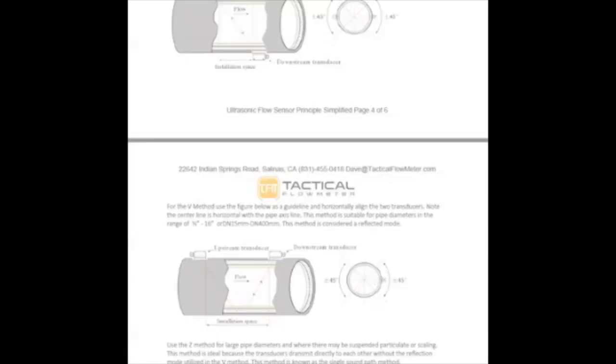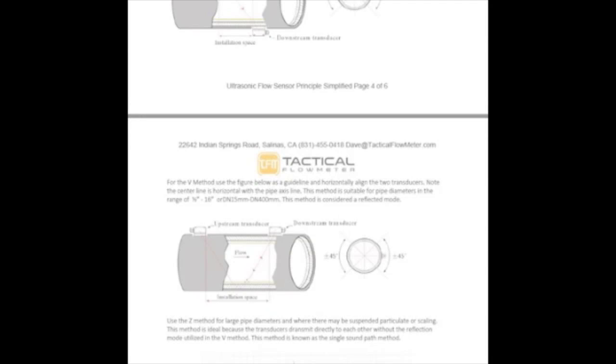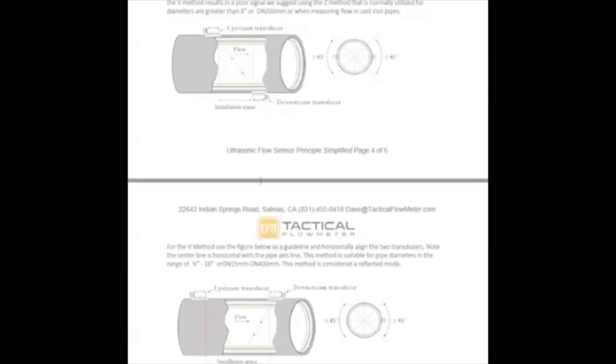So we want to show the two different methods. This is the most common method we will suggest that folks use, from half-inch to 16-inch pipes, most commonly used. And then this explains why you would use this kind of system. If the signal's poor or you're measuring the flow in greater than eight-inch or measuring the flow in cast-iron pipes, you would be using this kind of direct shot. Not a ricochet like this, but the direct shot.